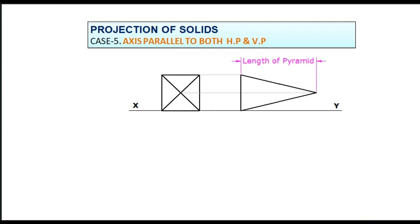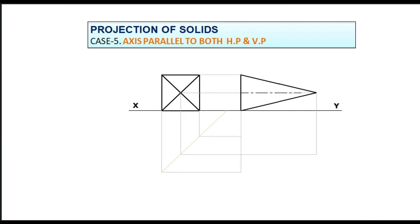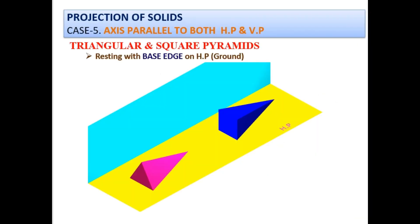To draw the plan, draw a mitre line. Project all the base corners and apex point towards the mitre line. From the mitre line, draw projectors horizontally and maintain the length of the plan same as that of the elevation. Join the base corners to the apex point. All the views of the square pyramid resting on the ground with its base edge and axis parallel to both planes are completed.